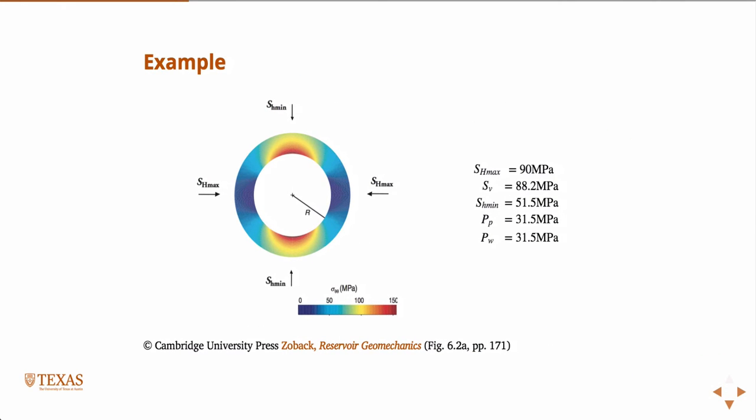Here's an example of just plugging numbers in and then plotting for an array of r values. Basically each of those colors or pixels on the screen represent a point-wise evaluation of those equations. Also notice that in this case delta p is zero, so the pore pressure and the mud weight are equivalent.